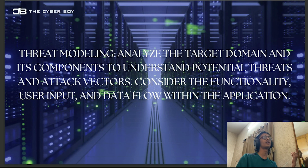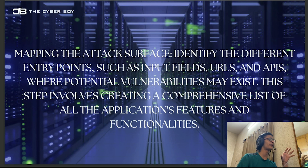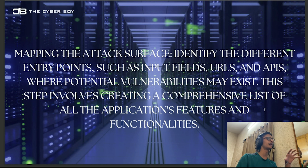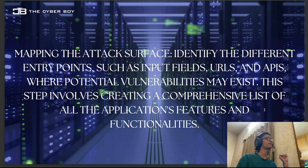Map the attack surface to identify different entry points such as input fields, URLs, and APIs where potential vulnerabilities may exist. You can check URL parameters and strings. APIs can be found from the source code — whenever you are trying to hunt on a program, don't forget to check out the source code, as there can be a lot of things there.